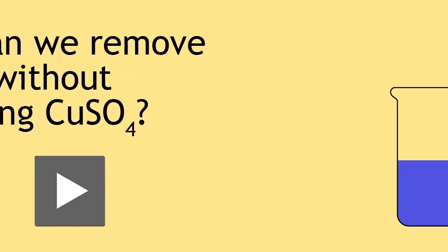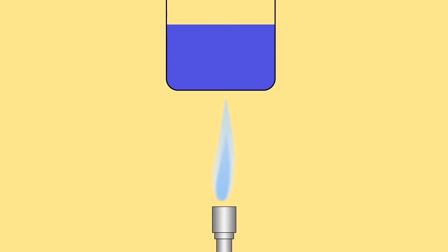We can evaporate some water right over the Bunsen burner flame. Then we can place the solution in a crystallizing dish near a windowsill and find that copper sulfate crystals have formed. These crystals are bright blue and you may notice that they have an irregular rhombus shape.